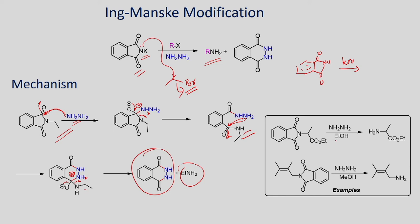Some examples are shown: instead of reacting further with base, you react with hydrazine to form an amino ester as a product. Another example shows reaction with hydrazine in methanol solvent to give the primary amine as the product. So if you want to make an alkylamine, you can use this method with hydrazine to get the corresponding primary amine as the product.